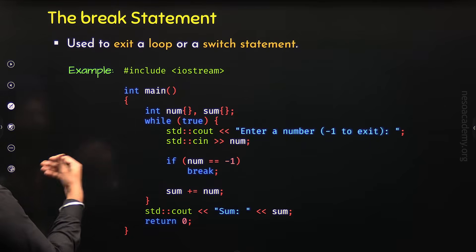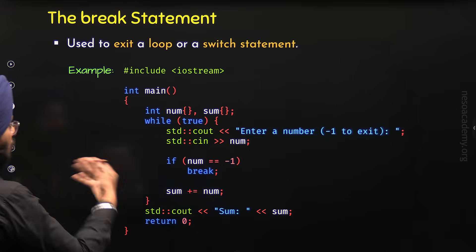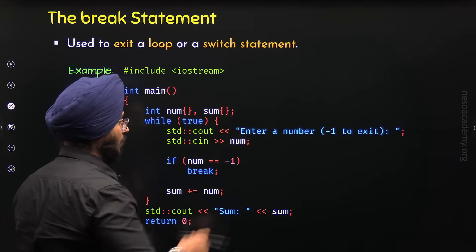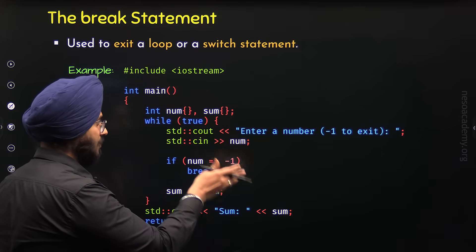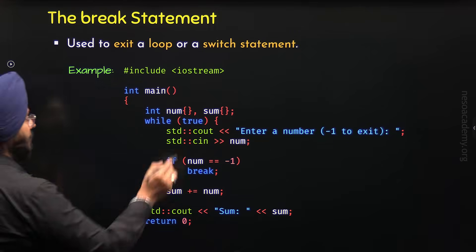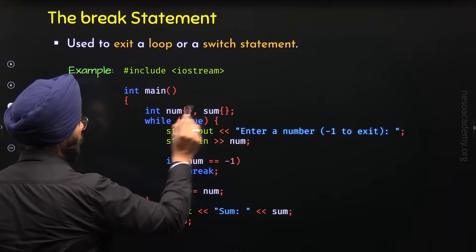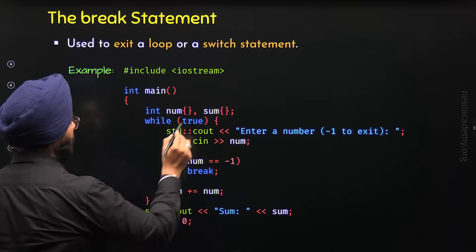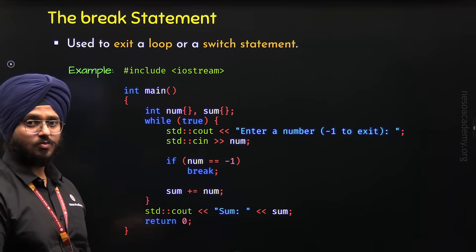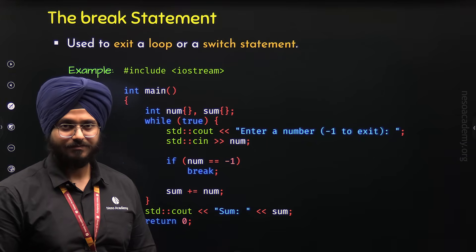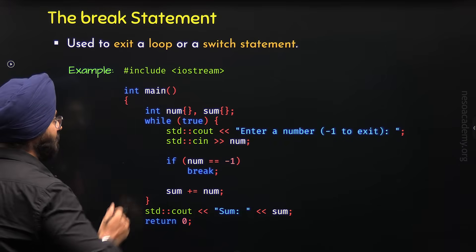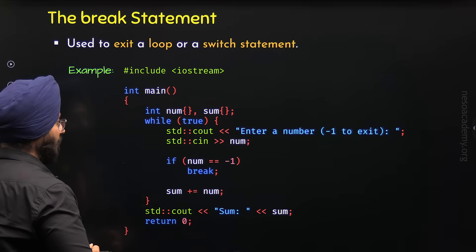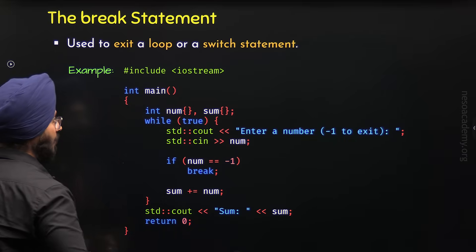With the help of this C++ program, I want to calculate the sum of all the numbers entered by the user. When the user enters minus 1, then the sum will be displayed on the screen. For this purpose, I have defined these two variables, num and sum. They are zero initialized. And then I have written this while loop where the condition is true. This means this while loop will run forever, because the condition never becomes false, and this means this while loop will not terminate. Therefore, this is an infinite while loop.